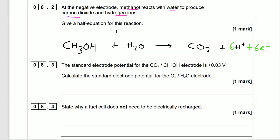Is this oxidation or reduction? It's happening at the negative electrode. Looking at the equation, electrons are on the product side — electrons are being lost — so this is oxidation.